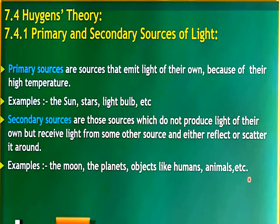There are two types of sources: primary sources and secondary sources of light. Primary sources are those sources that emit light of their own because of their high temperature.